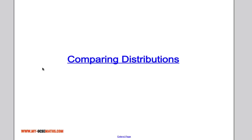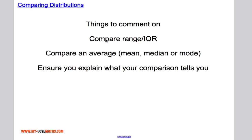So there's lots of different ways this type of question can come up, but the important thing to note is that you need to comment on a range, or interquartile range where possible, which basically tells you how varied the data is, and also compare an average.